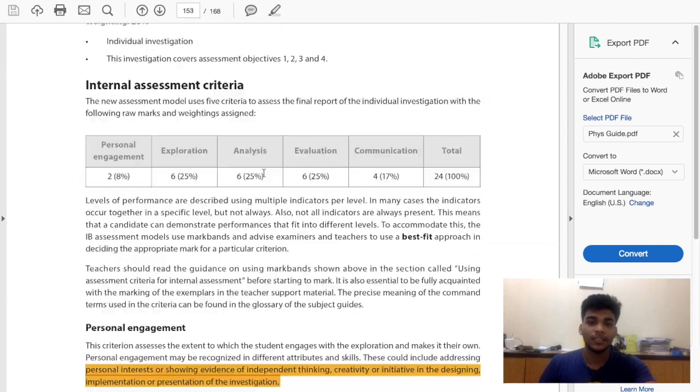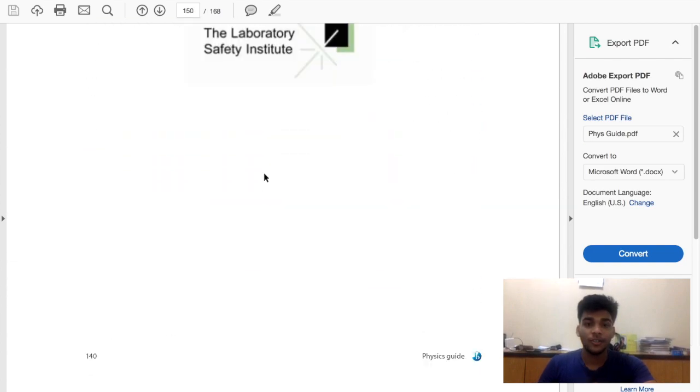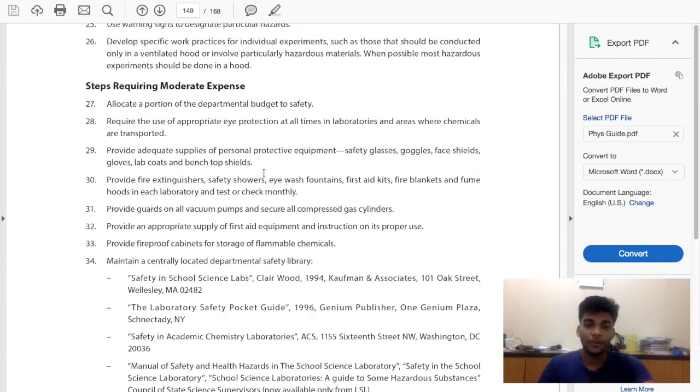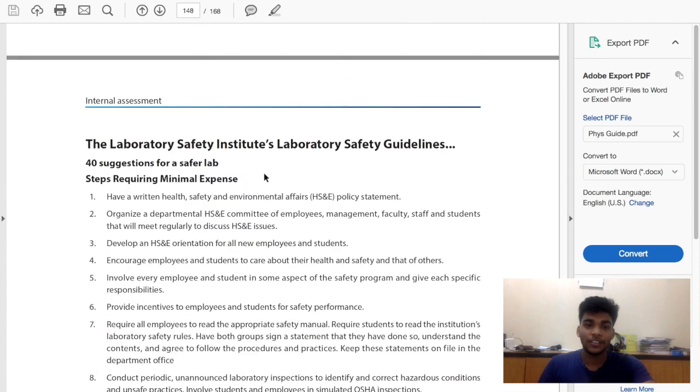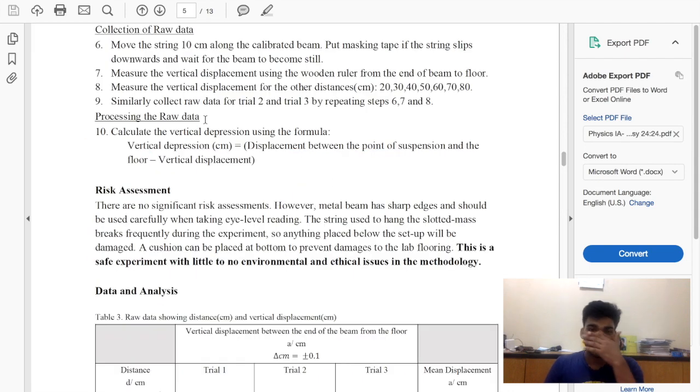Next, risk assessment. If you look at the syllabus, go up before the IA, before the marking criteria, and you will see this entire thing about safety in the physics syllabus. So put a risk assessment in there. There's a lot of things you can even find in that list. If it's a simulation, just put risk assessment there and say there are no significant risk assessments.